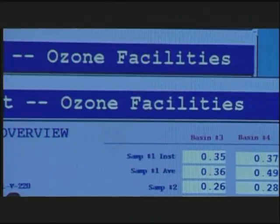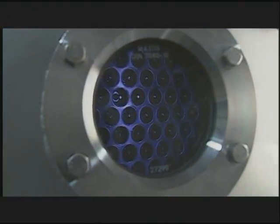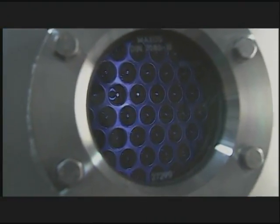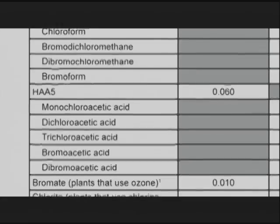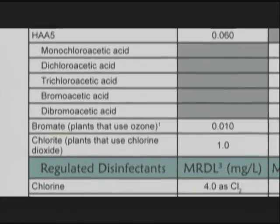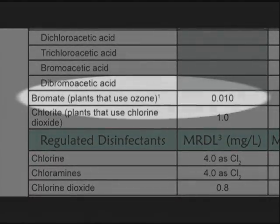Plants that use ozone as a disinfectant have to be concerned with the formation of bromate, which occurs when bromide in the source water reacts with ozone. The maximum contaminant level for bromate is 0.01 milligrams per liter, or 10 parts per billion.